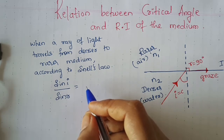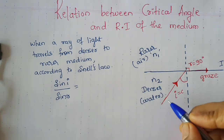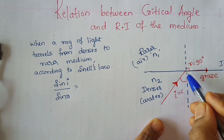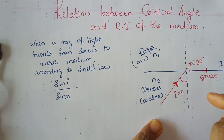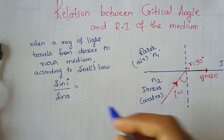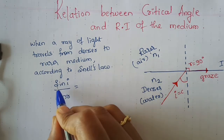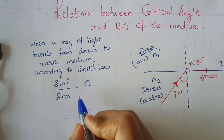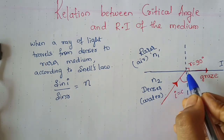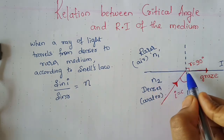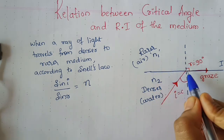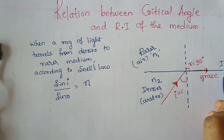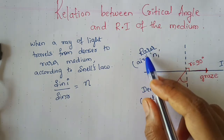The refractive index of the medium — how do we write it going from denser to rarer? Snell's law gives sin i / sin r equal to the relative refractive index. Where is the light ray bending? It is bending in the rarer medium — it is grazing the interface but still in the rarer medium. So we write this as n12, the refractive index of medium 1 with respect to medium 2.